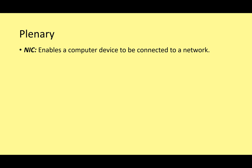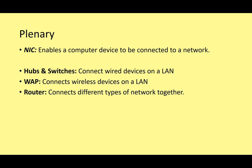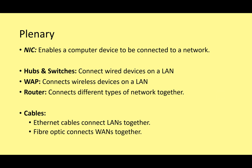Quick summary: a network interface card enables a computer device to be connected to a network. Hubs and switches connect wired devices on a local area network. A wireless access point connects wireless devices to your local area network. A router connects different types of network together. Ethernet cables are commonly used to connect local area networks, while fibre optic cables connect wide area networks - for example the undersea cables connecting Europe to America. I hope you found that useful - lots of different types of hardware covered. See you next week for the next video.